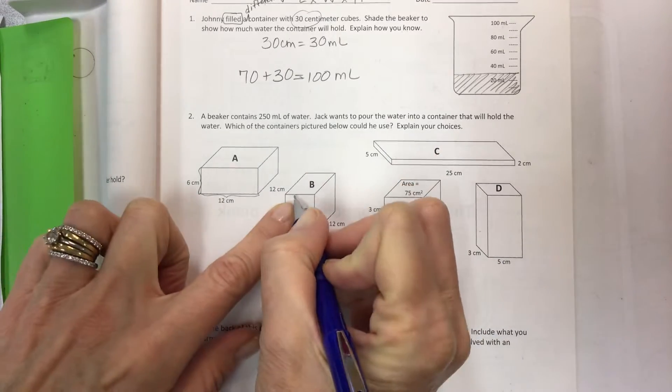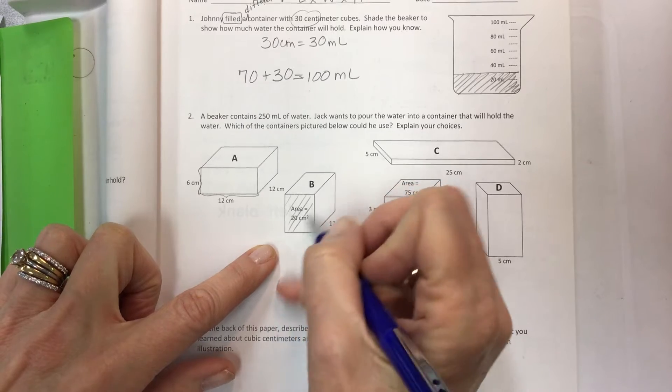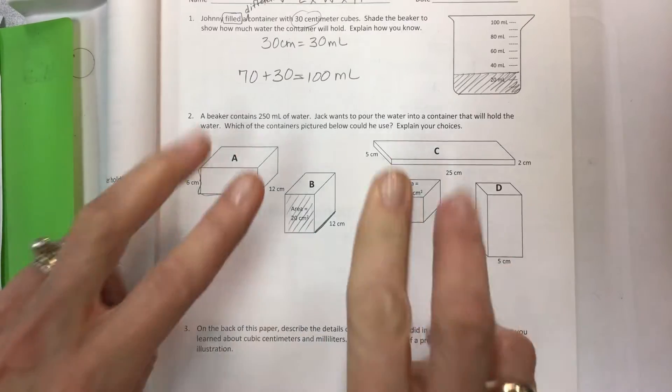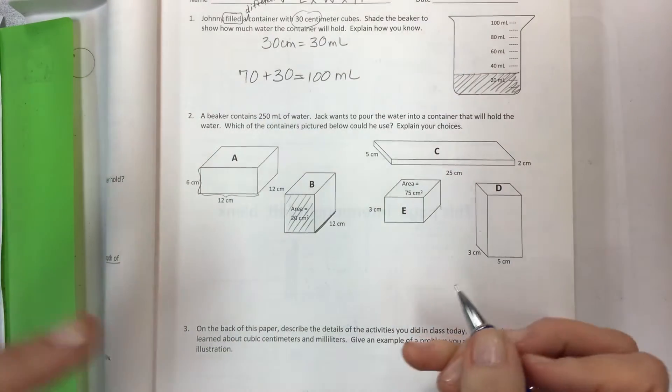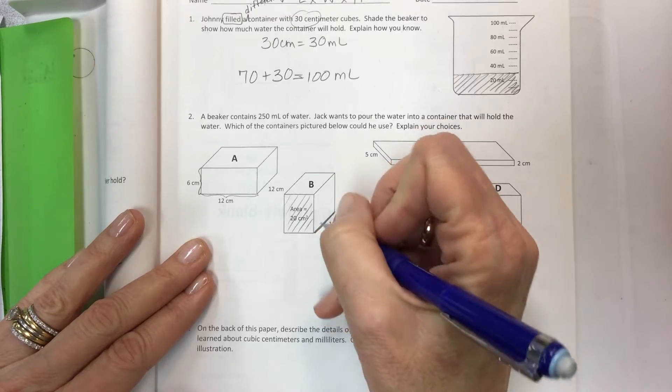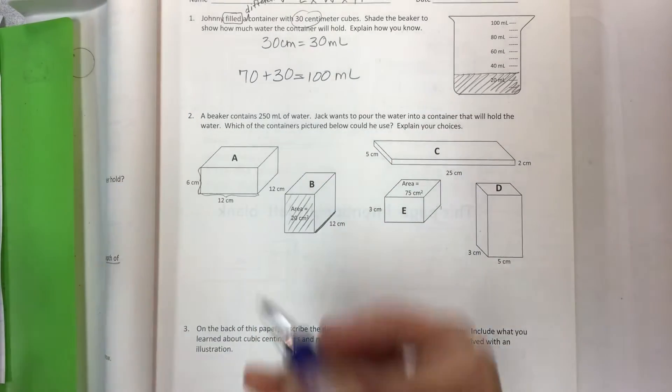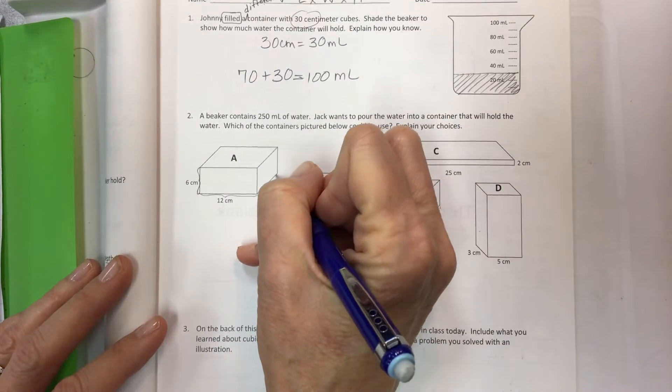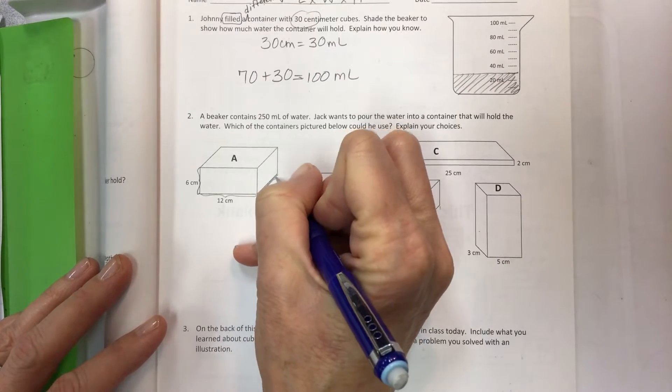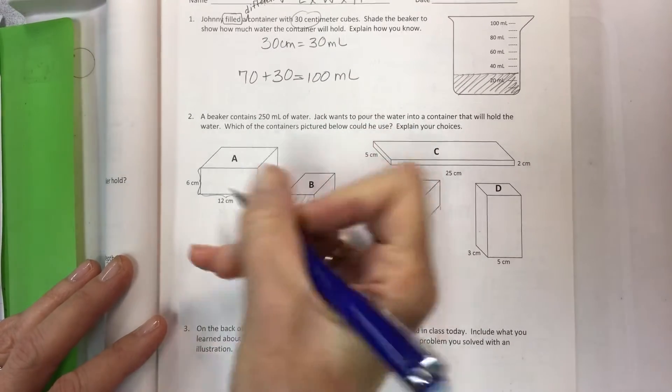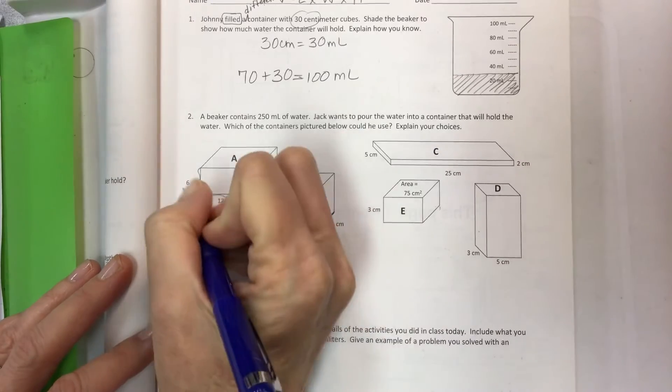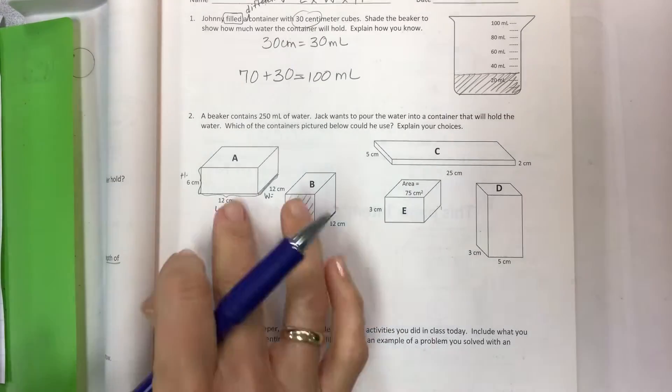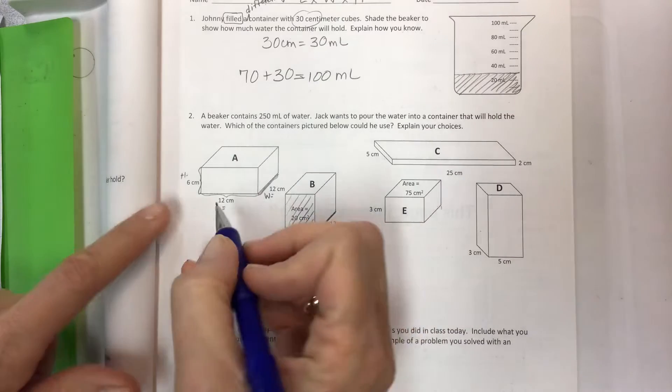The 12 centimeters is actually closer to this one but this is the area of the base or the face here. Remember I said height can be in any direction, it doesn't just have to be up down, it depends on where the area of the base is. There's no getting around this - you have to find the volume of each figure if you can and then explain your choices.